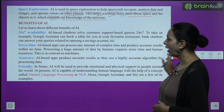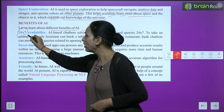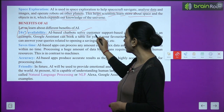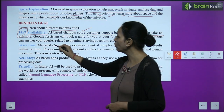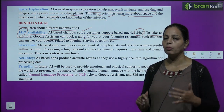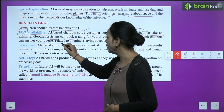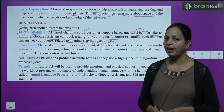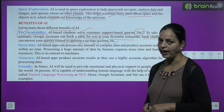Benefits of AI. First: 24×7 availability. AI-based chatbots solve customer support queries 24 hours, 7 days. For example, Google Assistant can book a table for you at your favorite restaurant — aapne kahan khana khana hai, booking kar sakte hai online. Bank chatbots can also answer queries related to opening a savings account. Kuch humein apna account open karna hai bank mein, toh hum woh bhi online kar sakte hai with the help of AI.